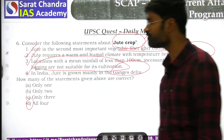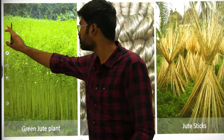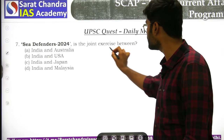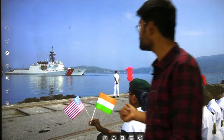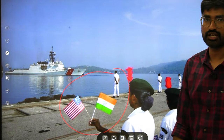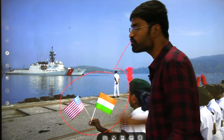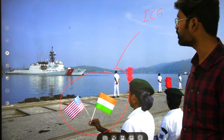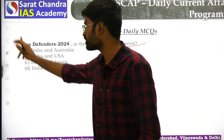The seventh question: Sea Defenders 2024 is a joint exercise between the Indian Coast Guard and the US Coast Guard. So the correct answer here involves India and the US.